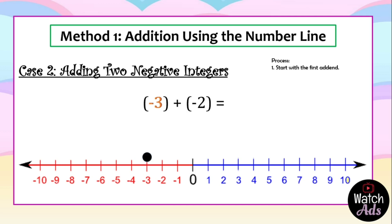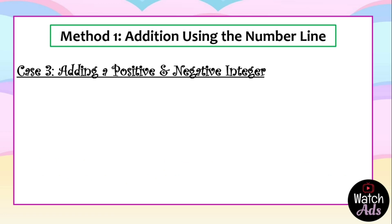We put a mark, then add negative two. Since negative two is a negative integer, we move to the left. Remember: if we add a negative integer we move to the left; if we add a positive integer we move to the right. We move two units to the left from negative three and we end up at negative five. The answer is negative five.